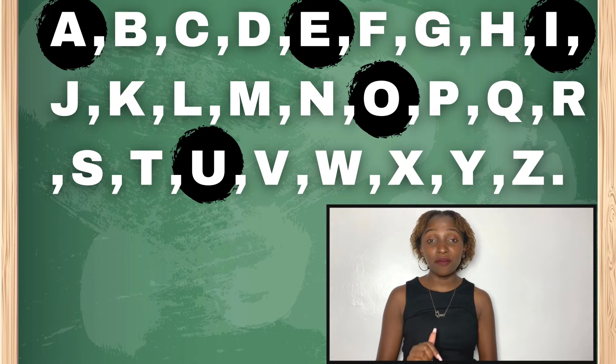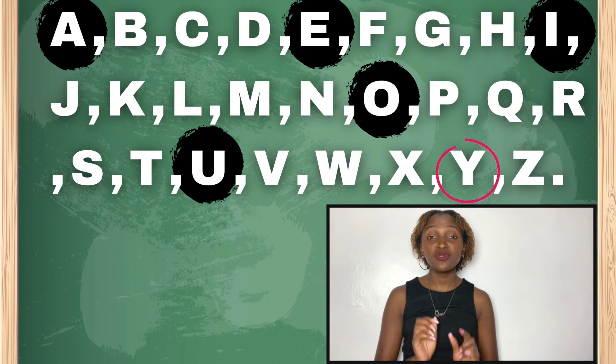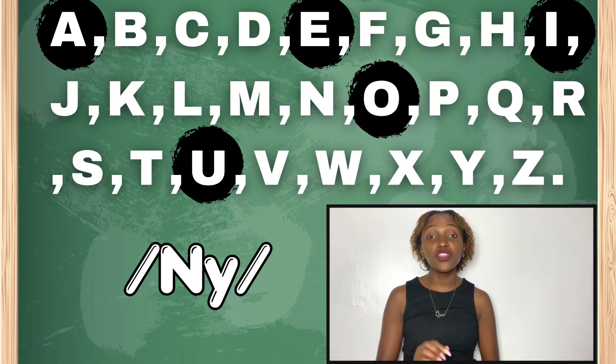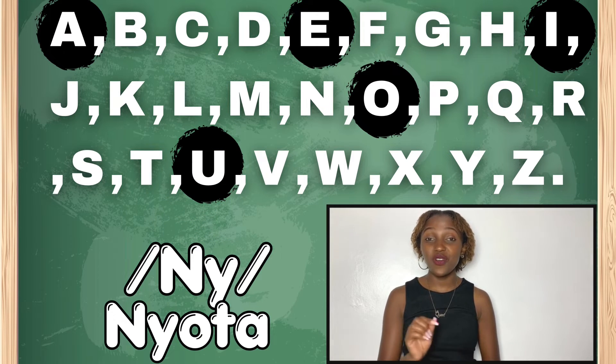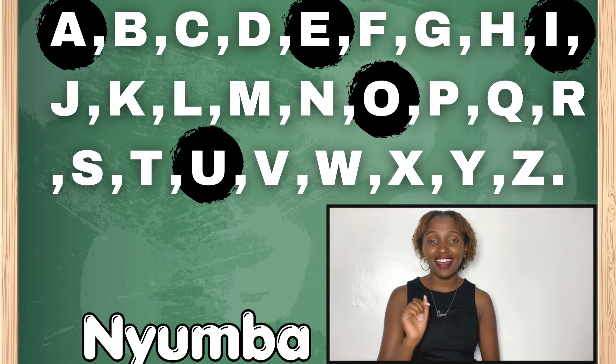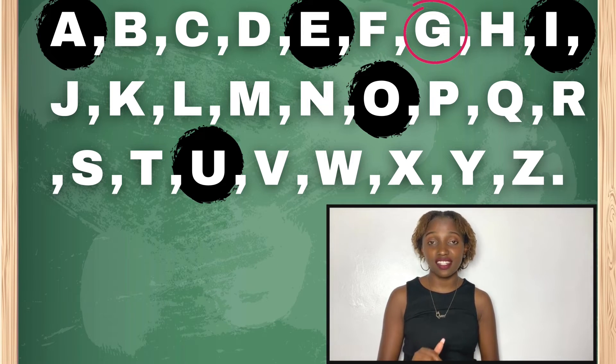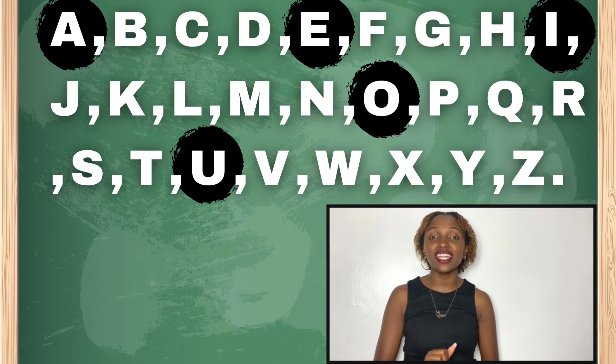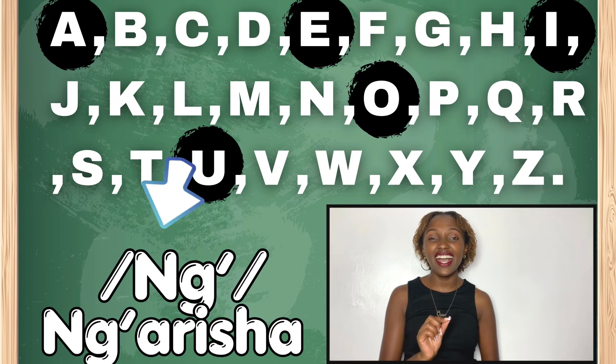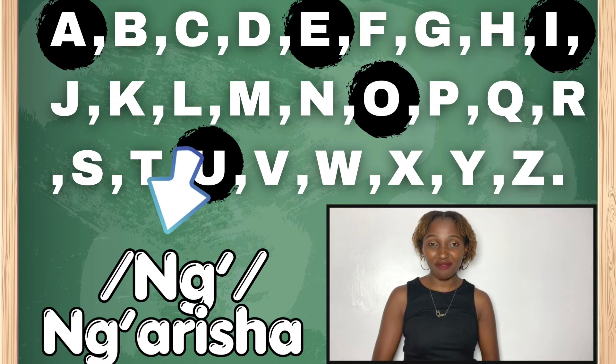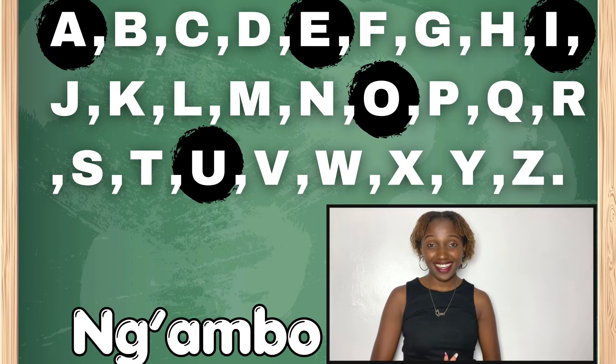Sasa katika N, pia tuneza ungeza Y to tutengeneze sauti NY. Kwa mfano, nyota, nyumba. Unaona? Pia, sauti N, tuneza ungeza G. Na tuweke kingomo pale juu. Tuchengeneze sauti NG. Ngarisha, ama ngambo.